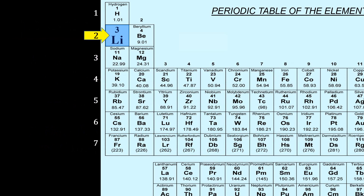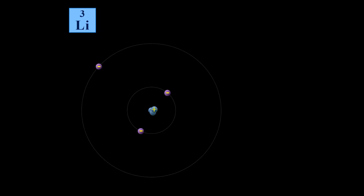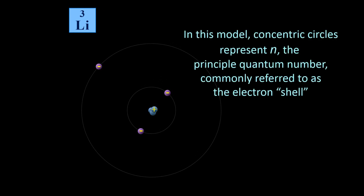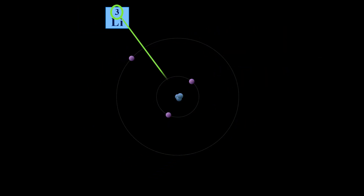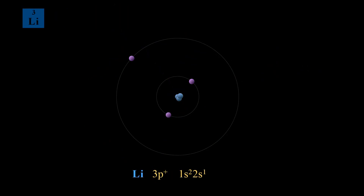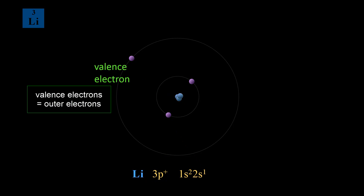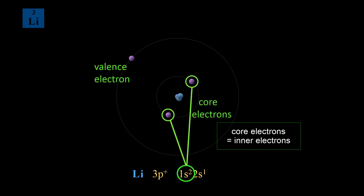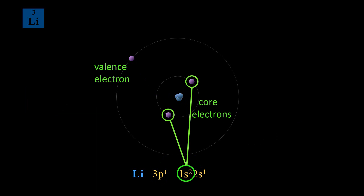Let's begin by looking at second period elements, starting with lithium, the first element in period 2. For this presentation, protons are blue and electrons are violet. The model of the atom we will use shows concentric circles representing the principal quantum number n, also called the electron shell. Lithium has three protons in its nucleus. The electron configuration shows one valence electron and two inner electrons, also called core electrons. How electrons are arranged relative to each other is an important part of understanding shielding and effective nuclear charge.